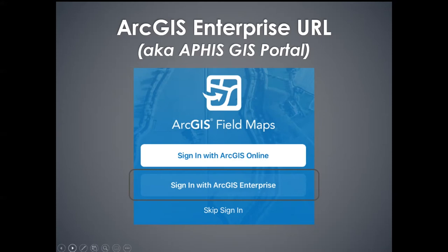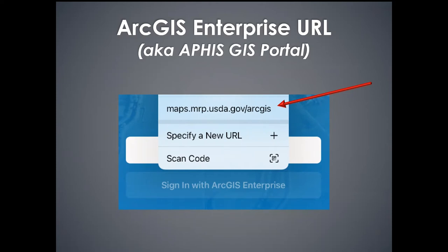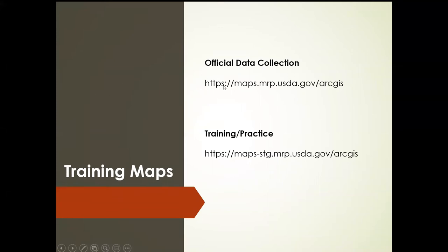After tapping Enterprise, you'll get options to specify a new URL or scan code. The first time, tap 'specify a new URL' — it will open the keyboard and you'll have to carefully manually type in the URL where the official map is hosted: maps.mrp.usda.gov. After you've entered it once, Field Maps holds on to that URL, so coming in the second time you just tap it. The first time you only see the two bottom options; after that your saved URLs appear at the top.